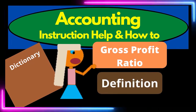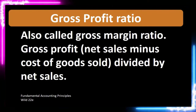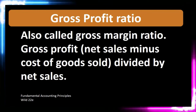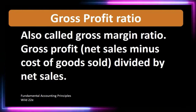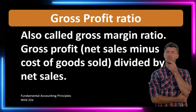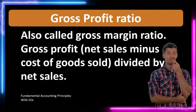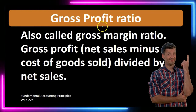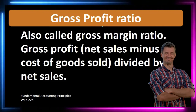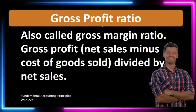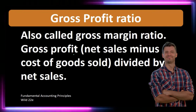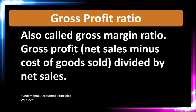Hello, in this lecture we're going to define gross profit ratio. According to Fundamental Accounting Principles, 22nd edition, the gross profit ratio is also called gross margin ratio. Gross profit equals net sales minus cost of goods sold, divided by net sales. We are talking about a ratio here, and it can be termed gross profit ratio or gross margin ratio — gross profit divided by net sales.